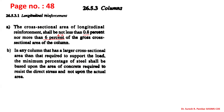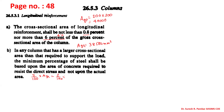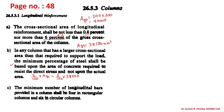In any column that has a larger cross-sectional area than required, the minimum percentage should be based on the requirement. Suppose we require a gross area of 38,500 mm² and we have provided 200 by 200, which gives 40,000 mm². If we have two percent, we find the area as two percent of 38,500, not 40,000.